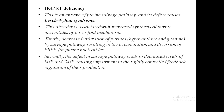The mechanism of HGPRT deficiency is twofold. First, purine bases hypoxanthine and guanine are not utilized, resulting in accumulation and diversion of PRPP toward de novo purine nucleotide synthesis. Second, due to decreased levels of IMP and GMP, feedback inhibition is impaired, further increasing purine synthesis.